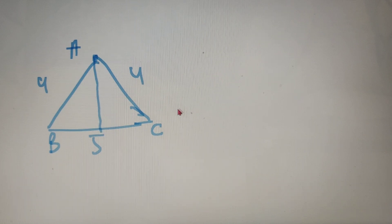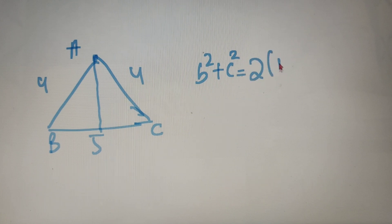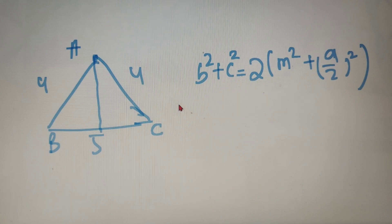Now according to the Apollonius theorem, we can say that B square plus C square is equal to twice of M square plus A by 2 whole square. So we just have to put the value of B, C and A in this equation and we will get the length of the median M.